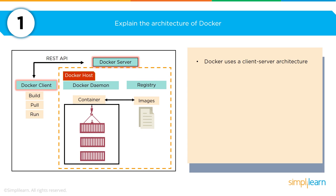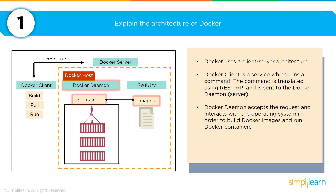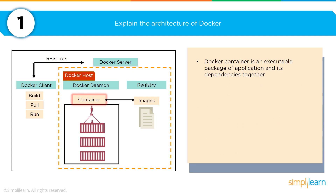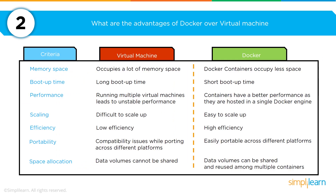You're going to be asked to explain the architecture of Docker. Docker uses a client-server architecture. The Docker client is a service which runs in a command line, and the Docker daemon runs as a REST API within the command line, accepts requests, and interacts with the operating system to build Docker images and run Docker containers. The Docker image is a template of instructions used to create containers. The Docker container is an executable package of applications and its dependencies. The Docker registry is a service to host and distribute Docker images among users.